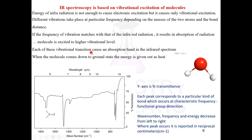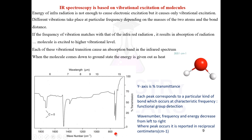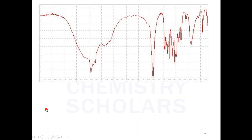Each vibrational transition causes an absorption band. When the molecule comes down to the ground state, the energy is given out as heat. The Y-axis is percentage transmittance and the X-axis is wave number. Wave number, frequency, and energy decrease from left to right. Wherever a peak occurs, it is reported as reciprocal centimeter or wave number (cm⁻¹). Each peak indicates a characteristic functional group.